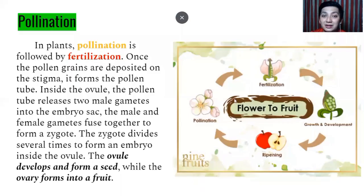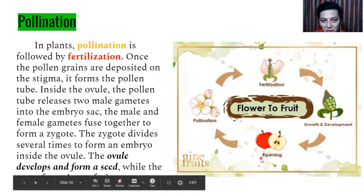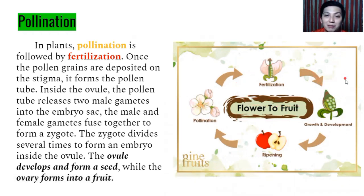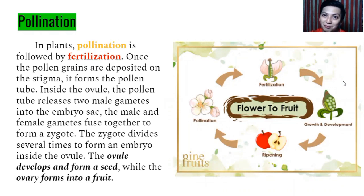The process follows this cycle: pollination, fertilization, growth and development, then ripening — from flower to fruit. Always remember: all fruits came from flowers, but not all flowers turn into fruit.